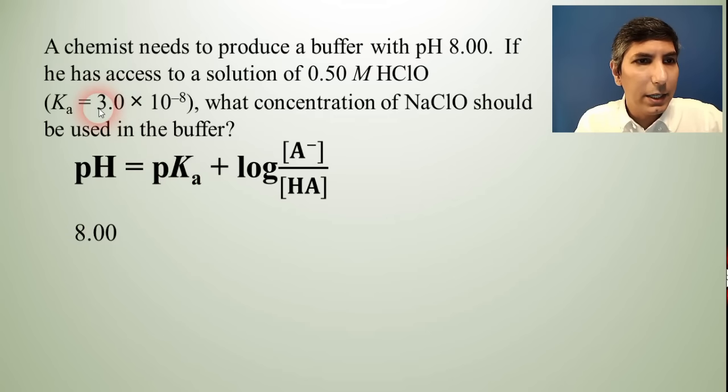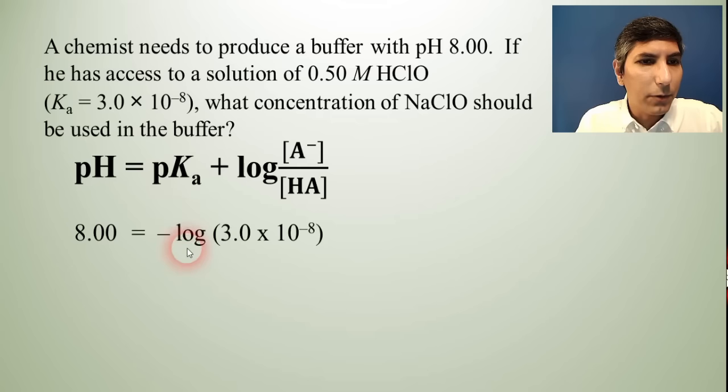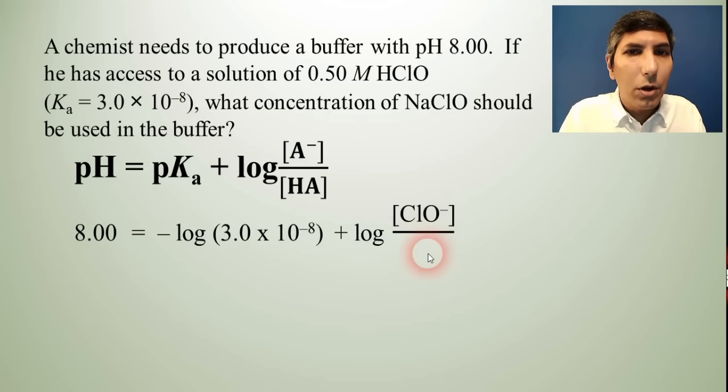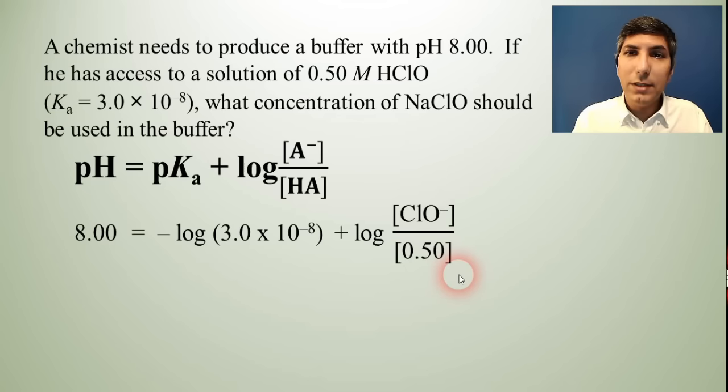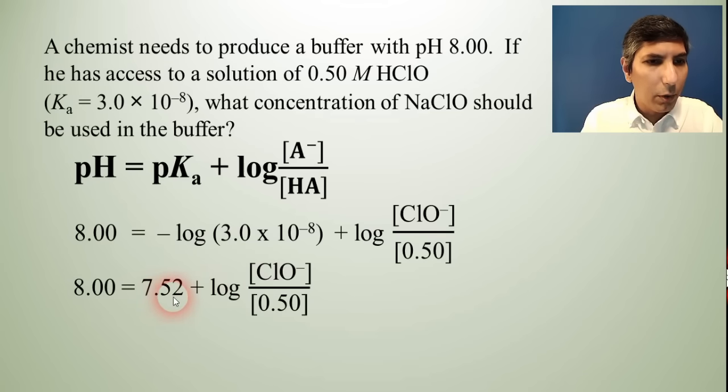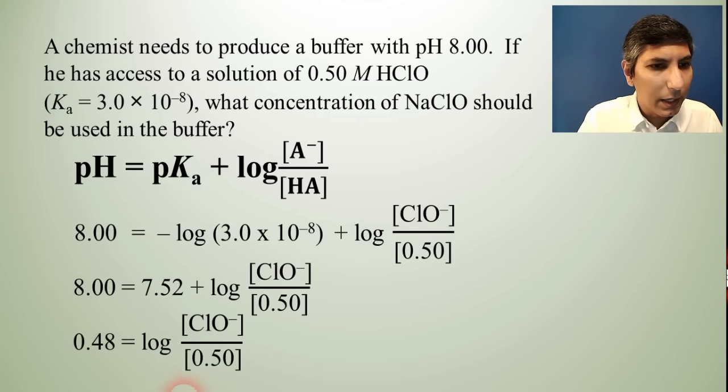So we're just going to plug and chug in here. We know what the desired pH is. It's 8.00. So I'm going to plug that in for pH right there. Now, the problem tells me what the Ka is. It's 3.0 × 10⁻⁸. So that goes in for Ka. So pKa is just the negative log of that number. Now, in this other term, the concentration of the base is what we are trying to find. We don't know what the concentration of the hypochlorite should be. So that's our unknown. Now, in the denominator, we do know what the concentration of the weak acid is. It's 0.50. So that's going to go into the denominator. And now we just have an algebra problem to solve. Sometimes it seems a little bit harder because we do have a logarithm to deal with, but we can still work our way through that.